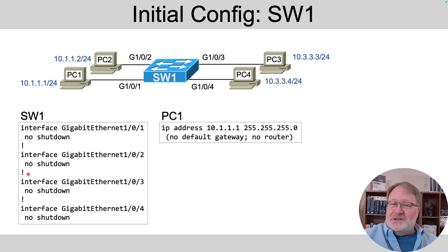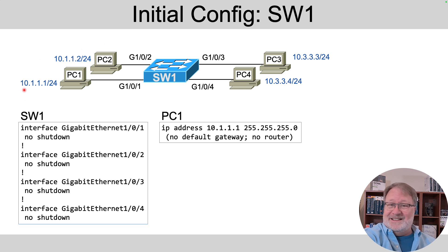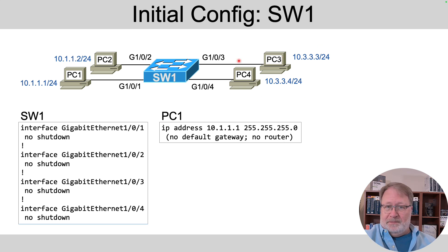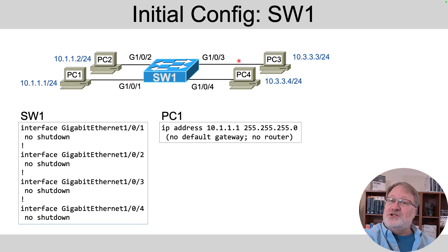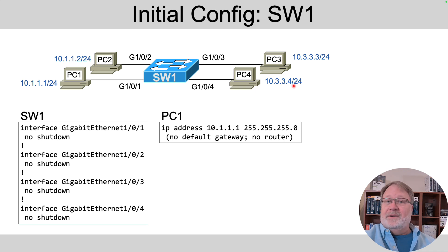The PCs are pre-configured with IP addresses that match the diagram. PC 1 and PC 2 are configured to be in the same subnet, and PC 3 and 4 are in a different subnet. Because of the VLAN design, PC 1 and 2 are supposed to be in the same subnet and should be able to ping each other at the end of the lab. Similarly, PC 3 and 4 are in the same VLAN and the same subnet, so they'll be able to ping each other at the end of the lab.